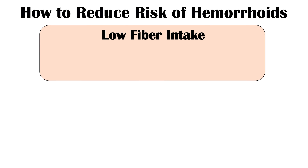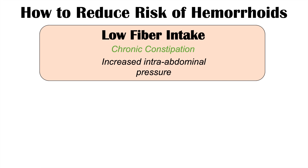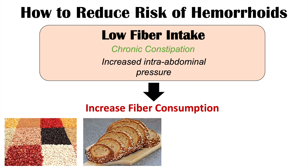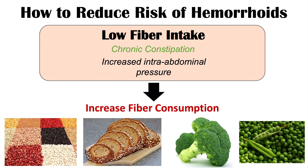Another risk factor we can change is low fiber intake or a low fiber diet. Low fiber intake can lead to chronic constipation, and straining during constipation increases intra-abdominal pressure, putting pressure on those vascular tissues and enlarging the hemorrhoids. It's important to increase fiber consumption by eating more lentils, multigrain or whole wheat breads, and vegetables like broccoli and peas.